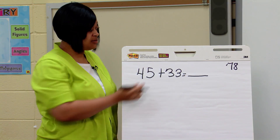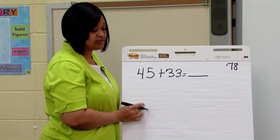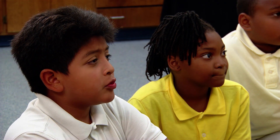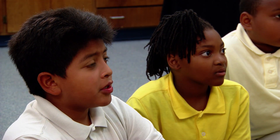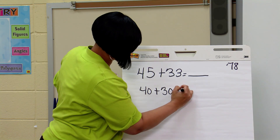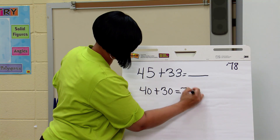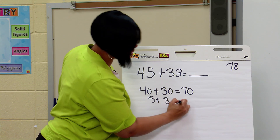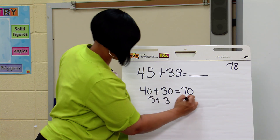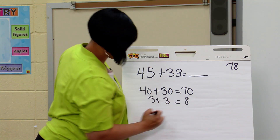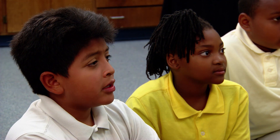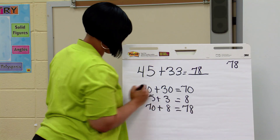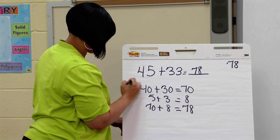Salvador, can you tell me why you got your answer? First, I added the tens, which was 40 plus 30, and it equals 70. Then I added my ones, which was 5 plus 3 equals 8. And then I added 70 to 8, and I came up with 78. Great. Very good. Good job. Excellent strategy.